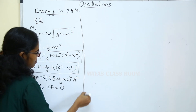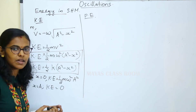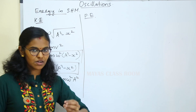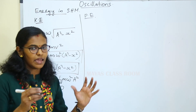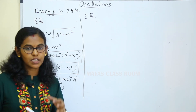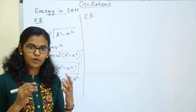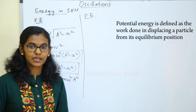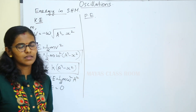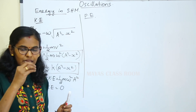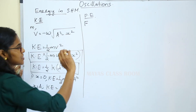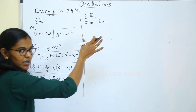This is the potential energy. The potential energy of simple harmonic motion is the work done in displacing a particle from its mean position. We consider a particle displaced from the mean position by distance x. The restoring force is F equal to minus k into x.